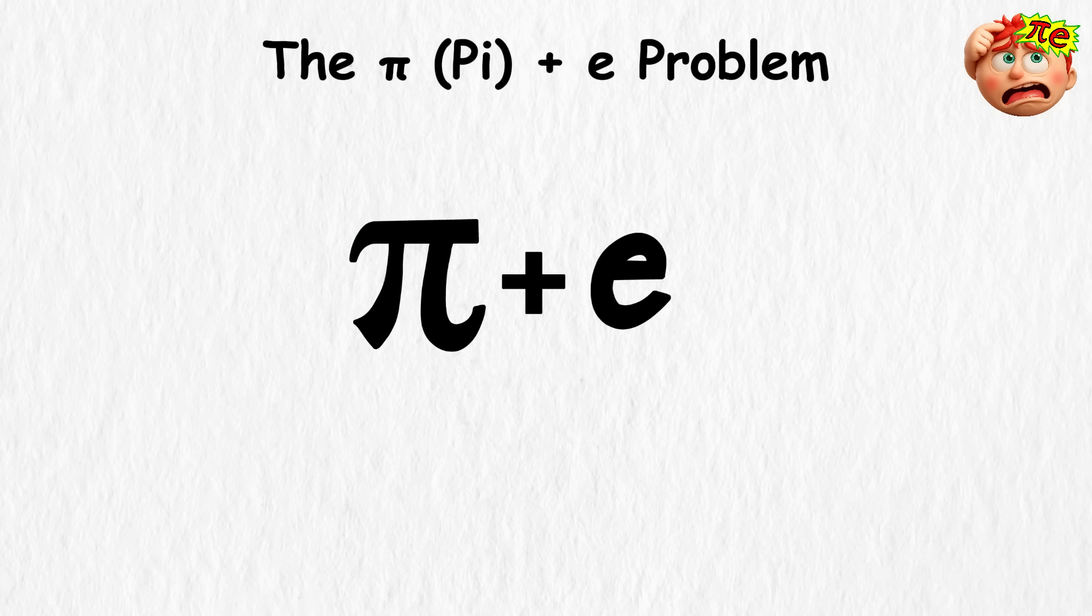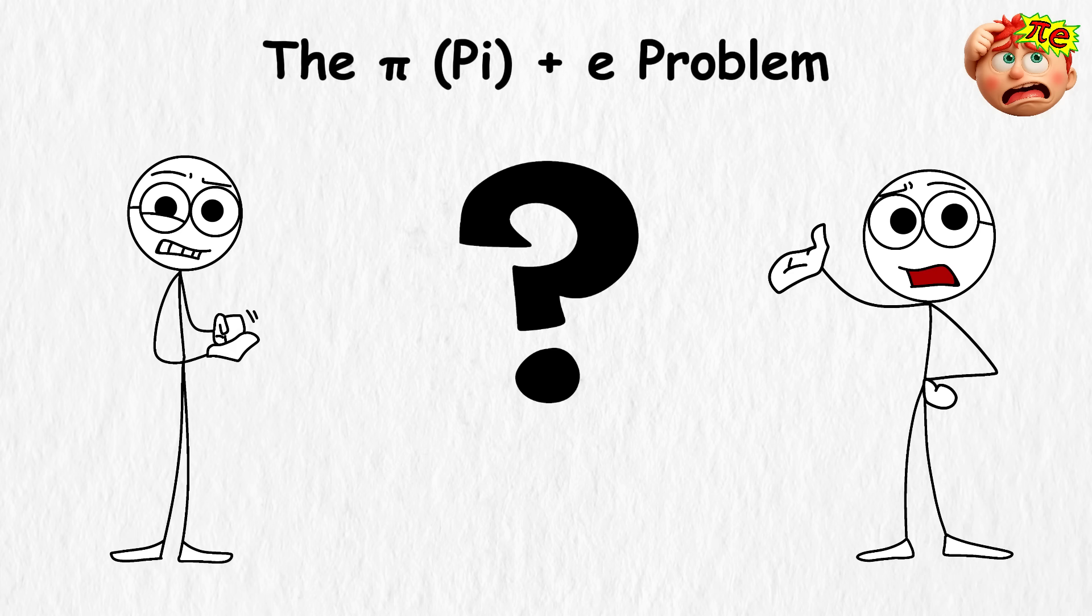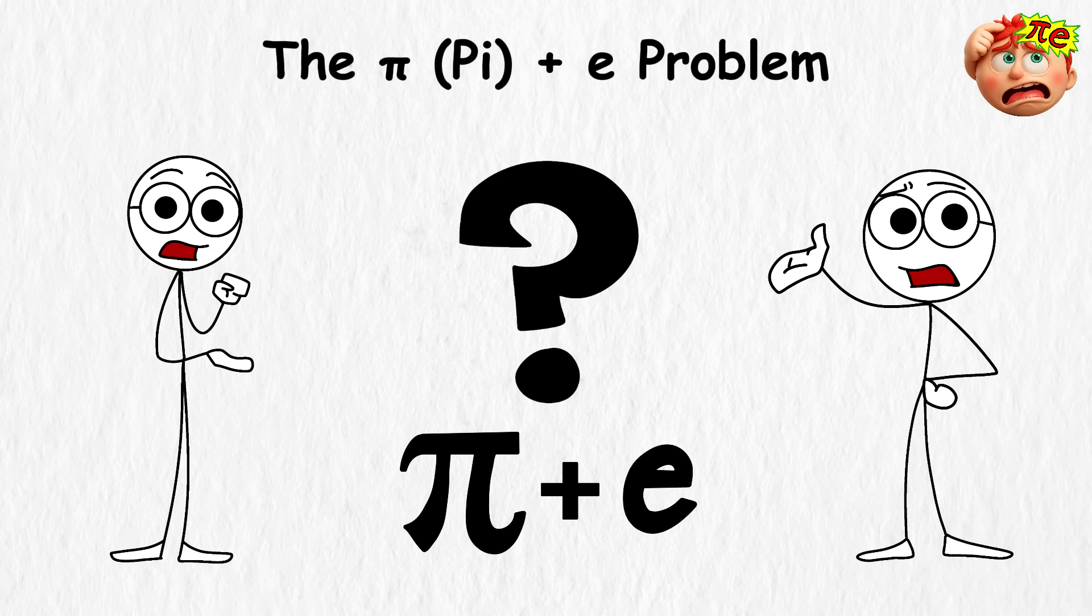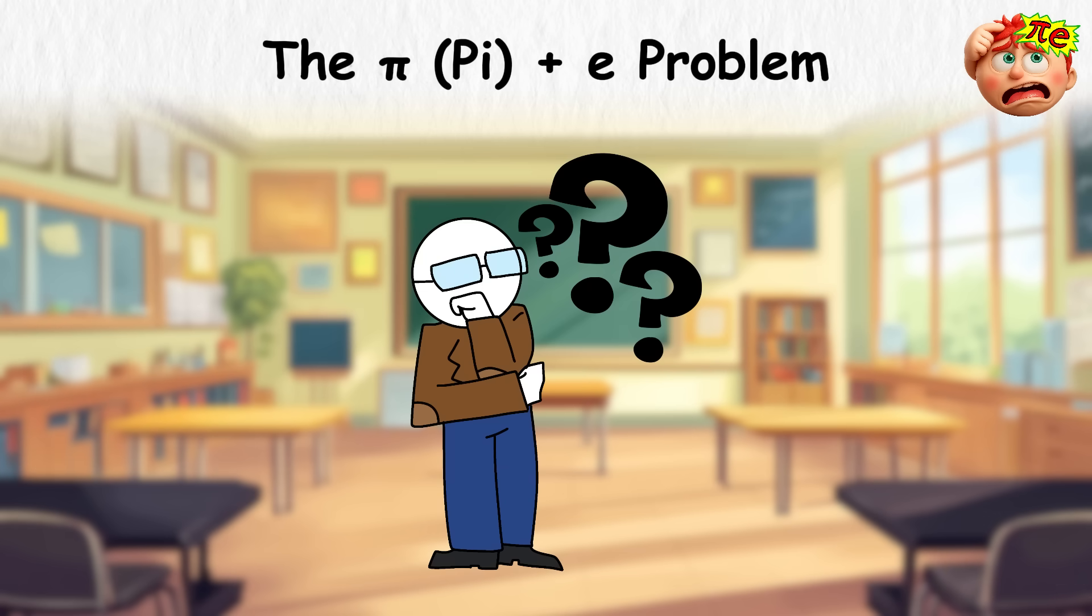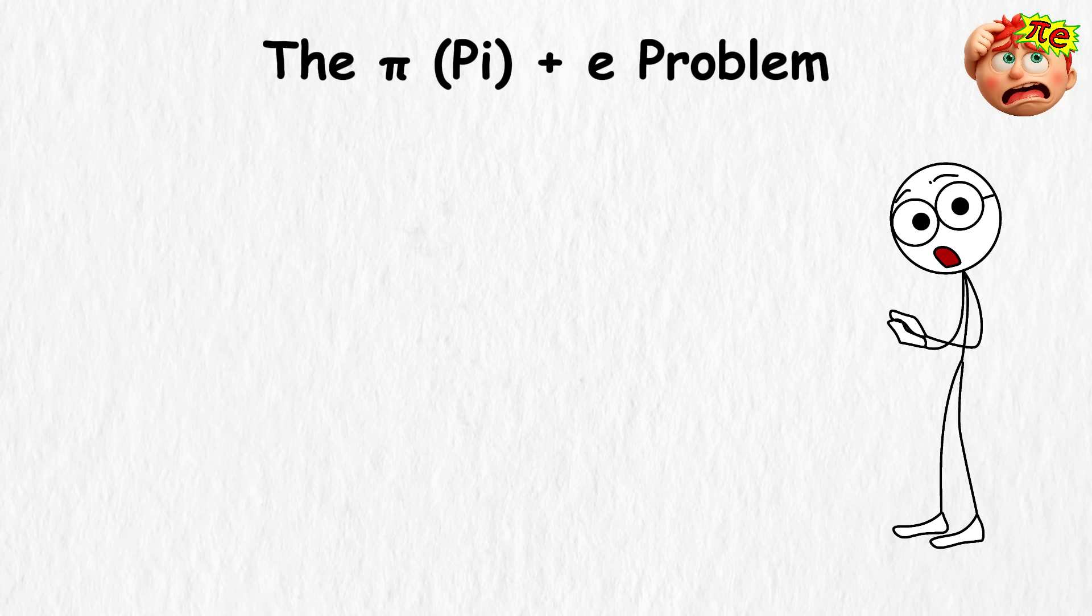Is Pi plus E another transcendental number? Or is it algebraic? Which means it does come from some nice, clean equation. Nobody has ever been able to prove it. And it's not just addition. Mathematicians are also stuck on Pi times E, Pi divided by E, and other simple combinations.